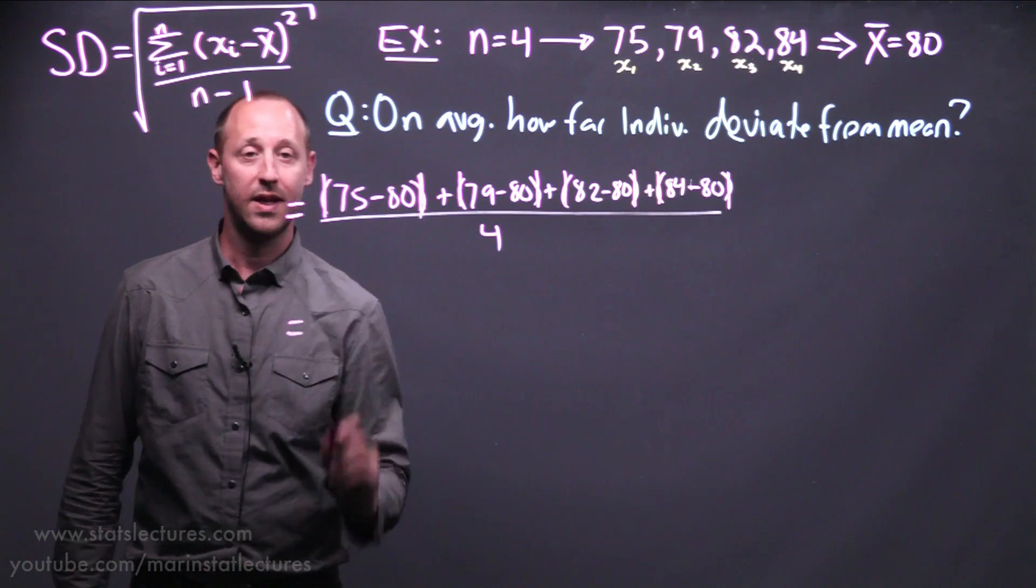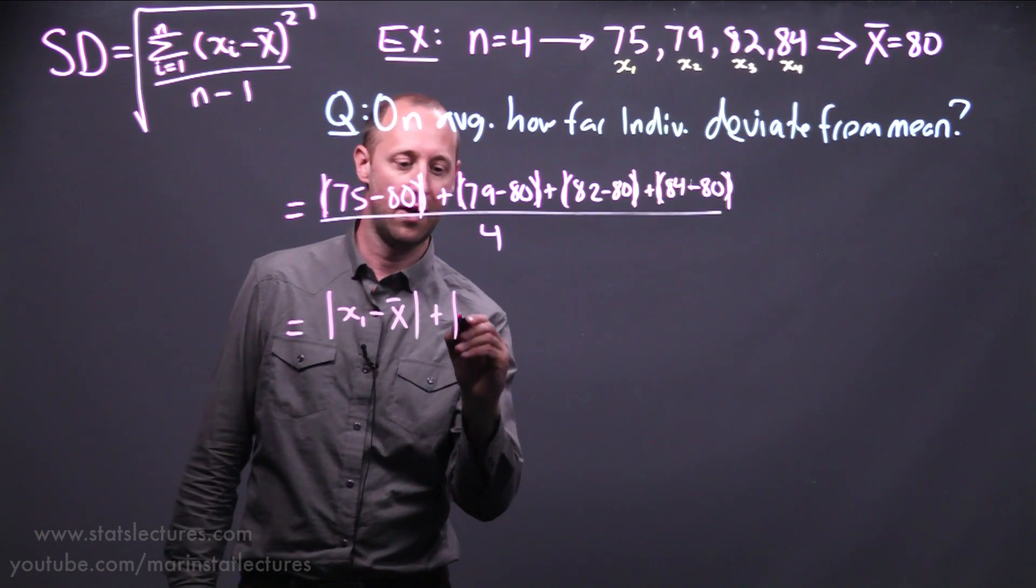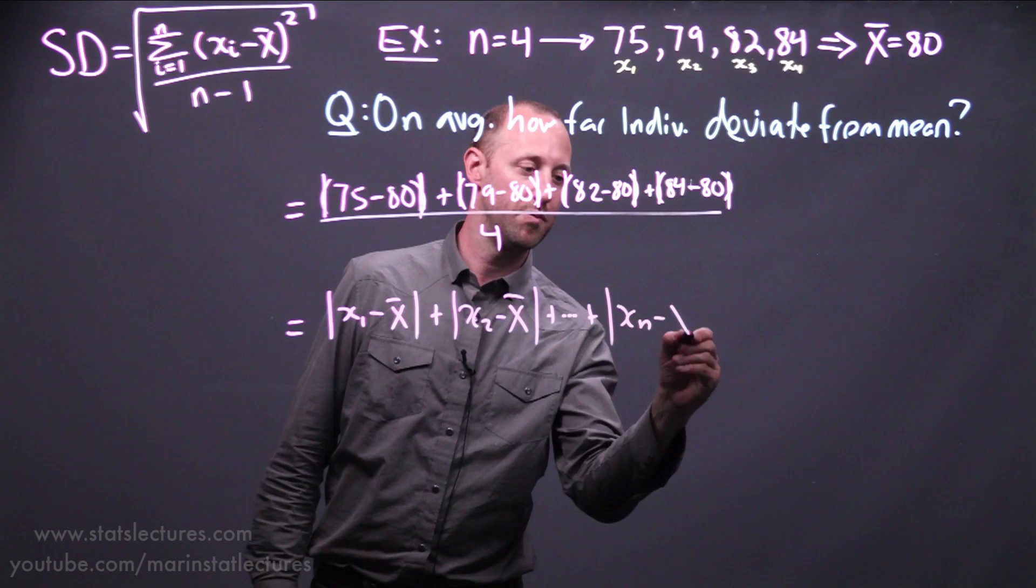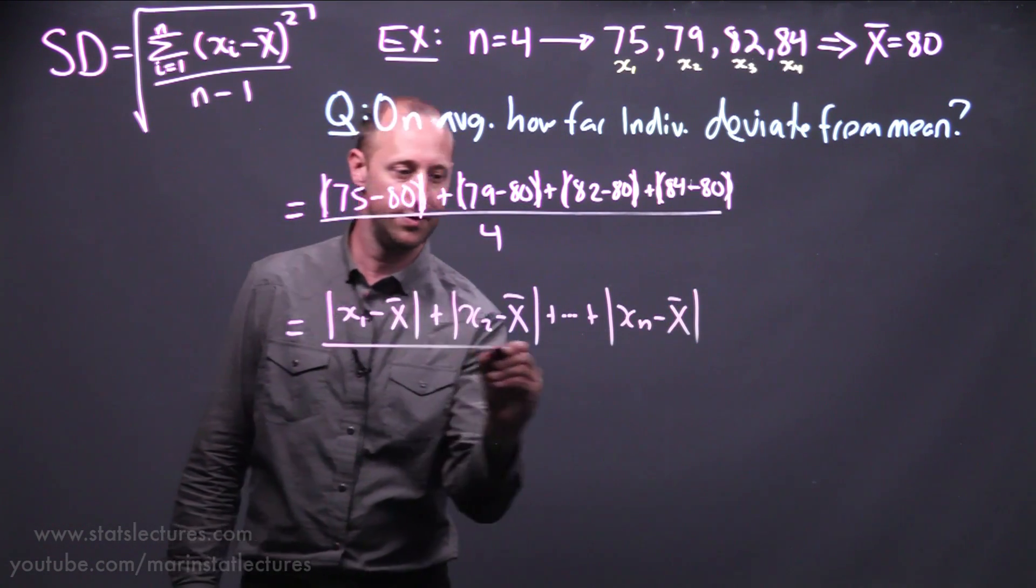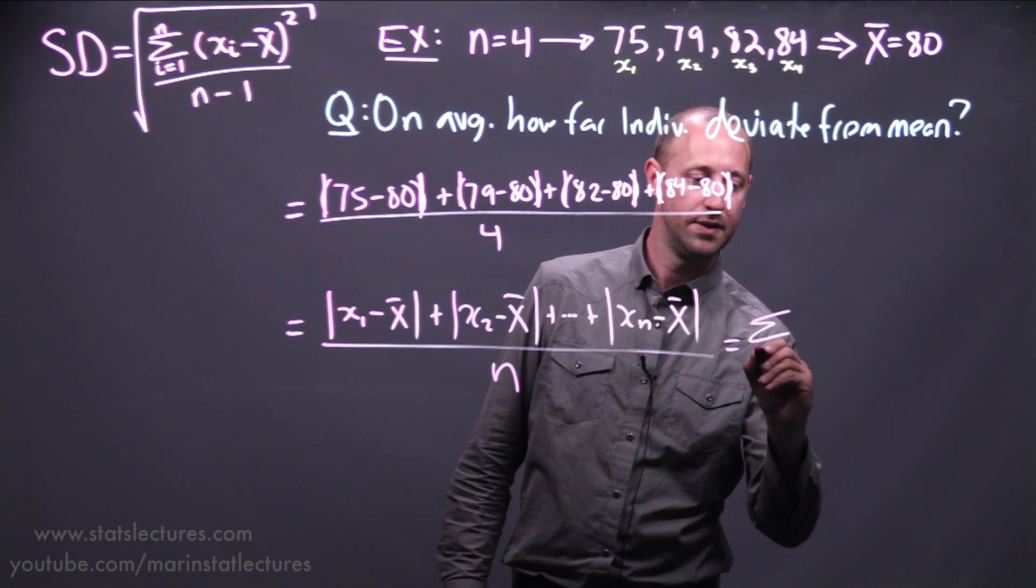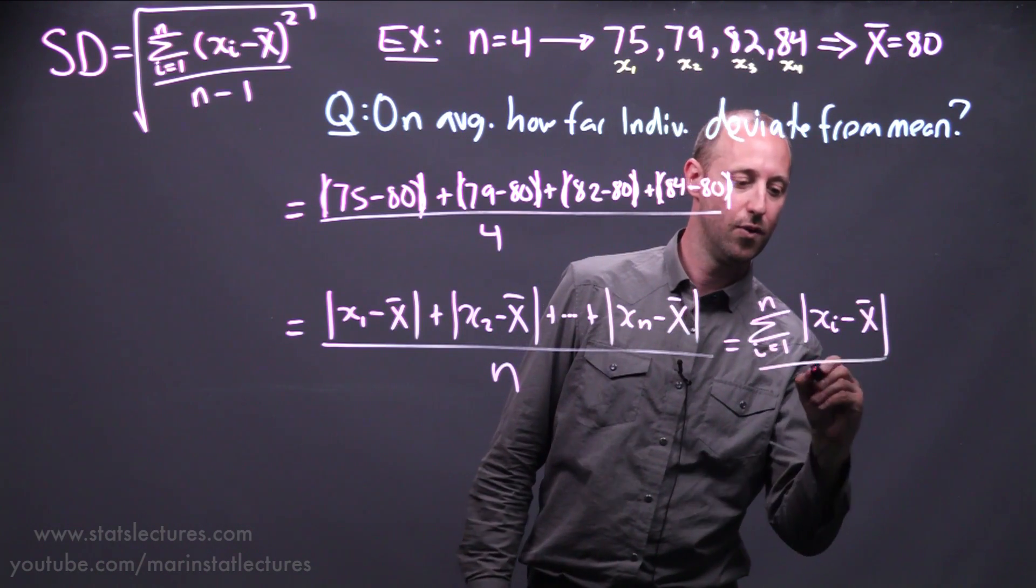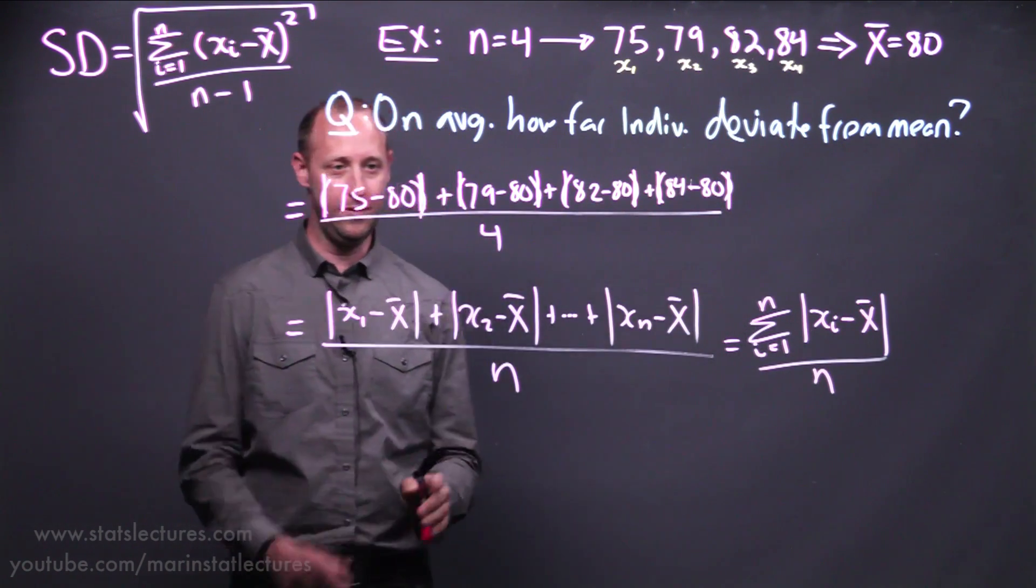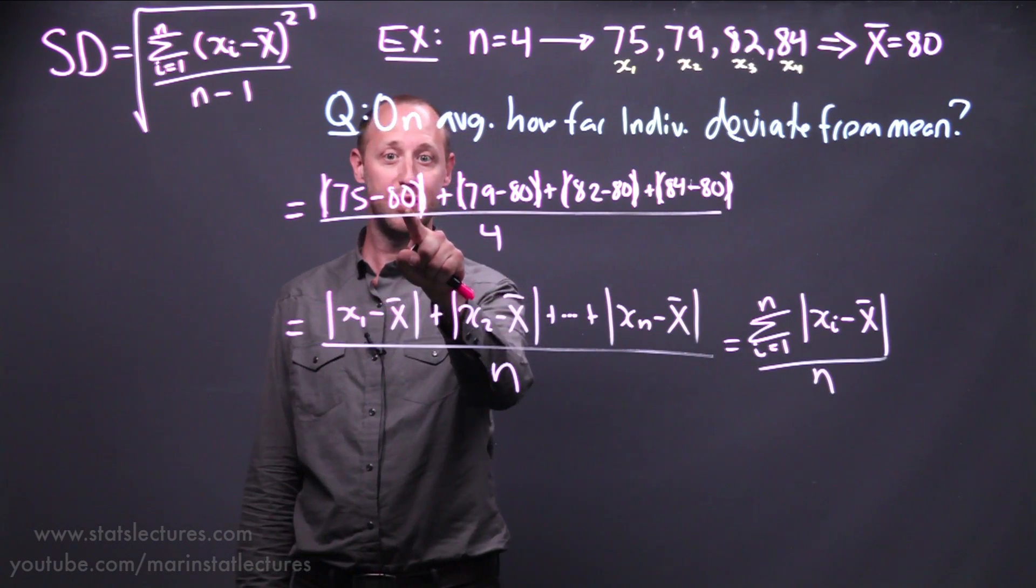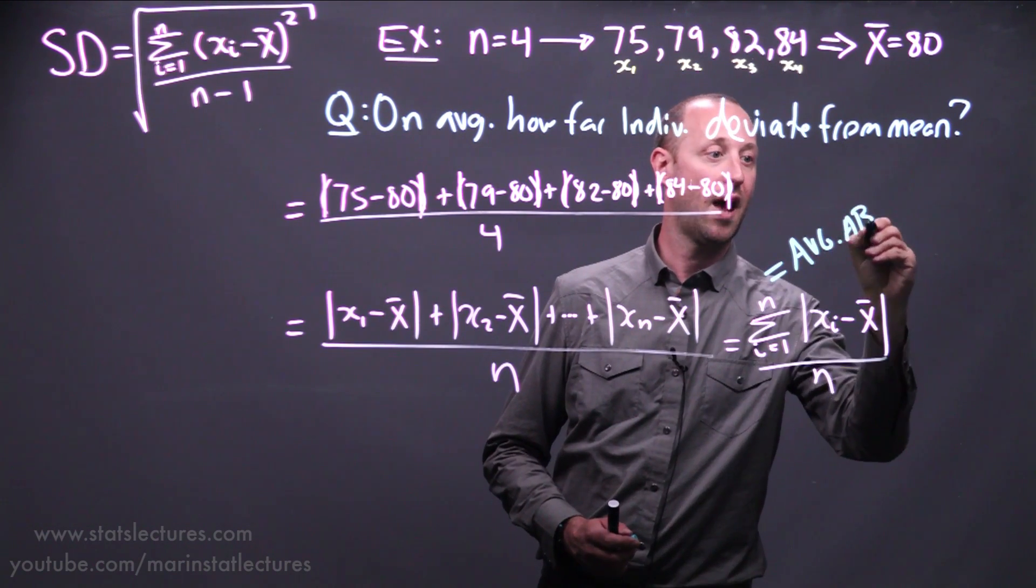If we were to write this in notation, we can think of this as being how far is x1 from the mean in absolute value, how far is x2 from the mean, all the way up to how far is xn from the mean. Generalizing this for n observations, and take their average or divide by n. Again, writing in a bit more notation, sum from i going 1 up to n, the absolute deviations of xi minus x-bar over n. We can see here this formula captures exactly that. Here we're getting the average of the absolute deviations. This is capturing the average absolute deviation.